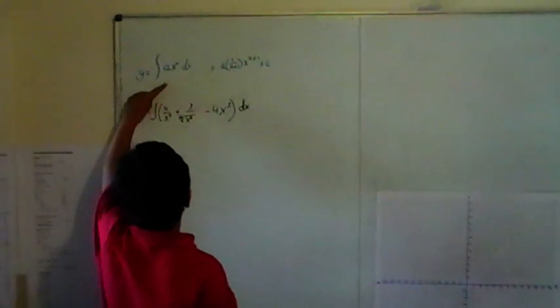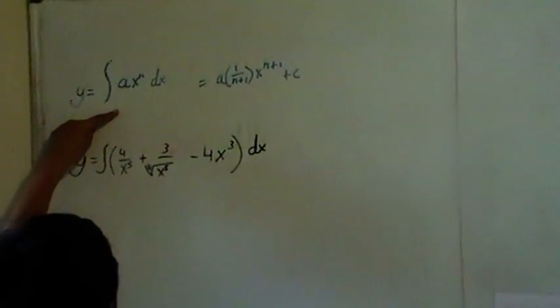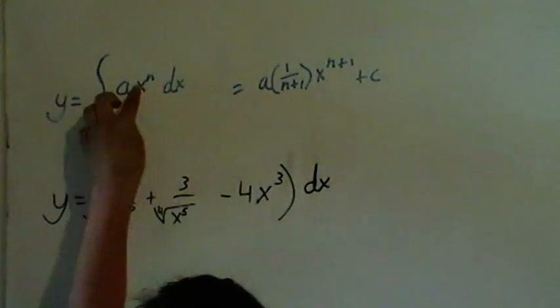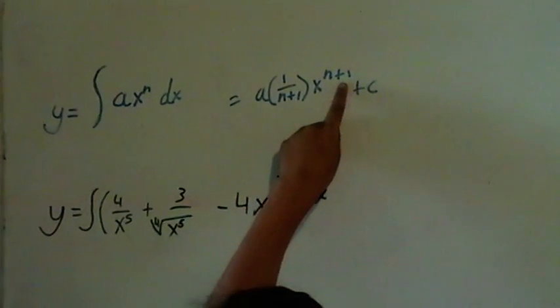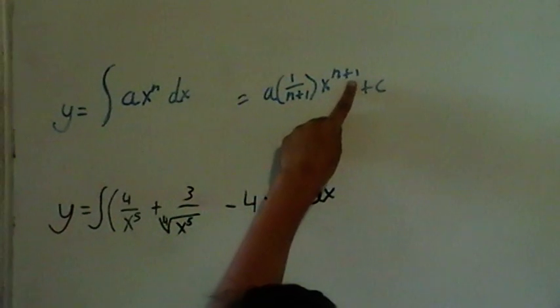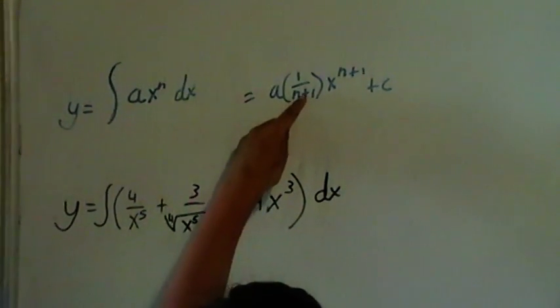This is the general form of writing a polynomial integration. And this is its result. You add 1 to the power like we did here. Then you do the reciprocal of that, which is 1 over n plus 1.